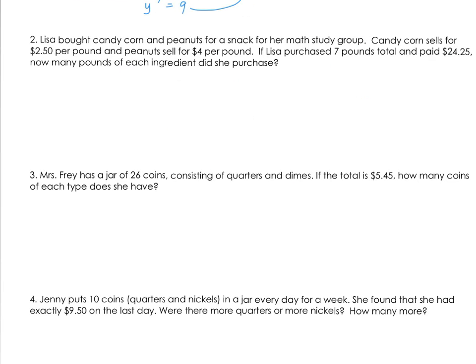Question 2: Lisa bought candy corn and peanuts for a snack for her math study group. Candy corn sells for $2.50 per pound, and peanuts sell for $4 per pound. If Lisa purchased 7 pounds total and paid $24.25, how many pounds of each ingredient did she purchase? If we're trying to find the amount of each type of ingredient, let's assign our two variables. I'll let x equal the pounds of candy corn, and y equal the pounds of peanuts.